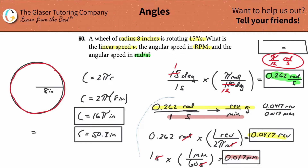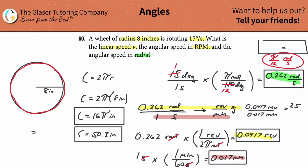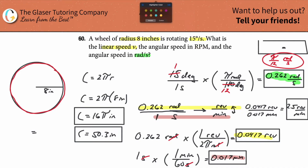The last step is to divide the revolutions value by the minutes value: 0.0417 revolutions divided by 0.0167 minutes. This comes out to almost exactly 2.5 revolutions per minute — you'd see this cleanly if you used exact values throughout. So 2.5 revolutions per minute is our answer for that part.